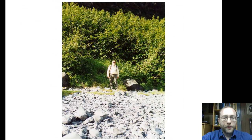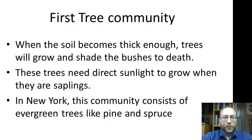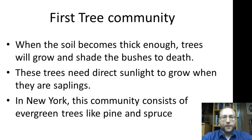These are trees — the first tree community. When the soil becomes thick enough, trees will grow and these will shade the bushes to death. These trees need direct sunlight to grow when they are saplings. The type of trees in Alaska are not the same as here in New York — the process of succession is the same, it's just the communities will be different. In New York, we have evergreen trees like pine and spruce, which are the first ones to come up.